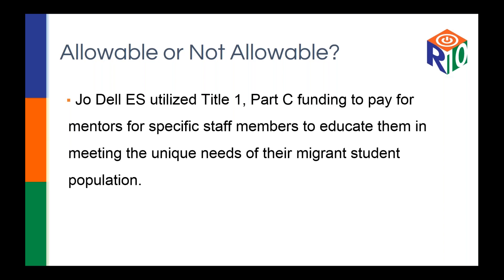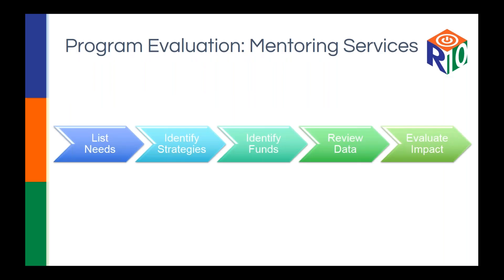That's an example of how you would evaluate that particular strategy, action, or program — the mentoring program with little-p program. You would do this for each of the funding sources or charges you are trying to allocate to the particular program, Big P, Title I Part C. That is the overall evaluation of Title I Part C: your strategies, and the impact of the program itself.